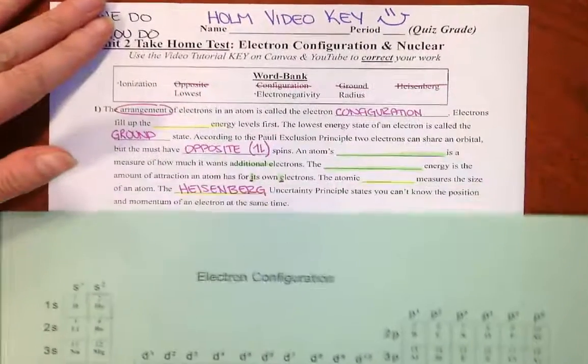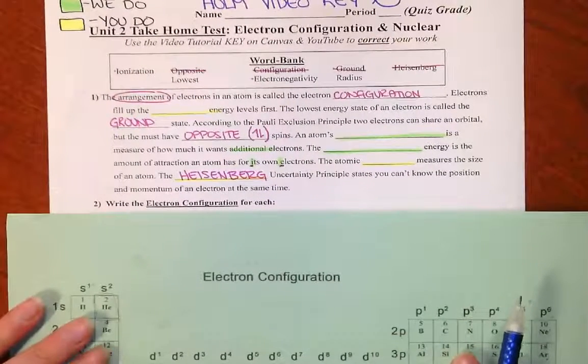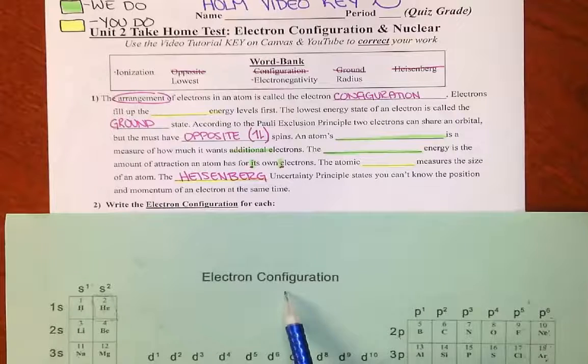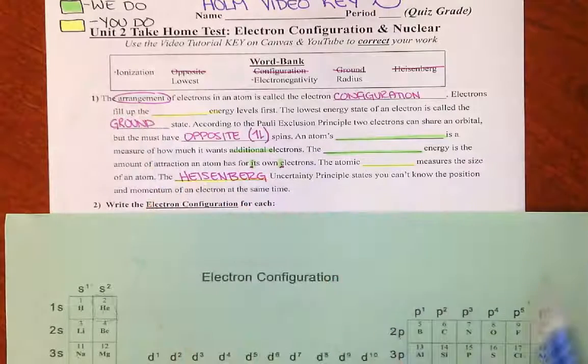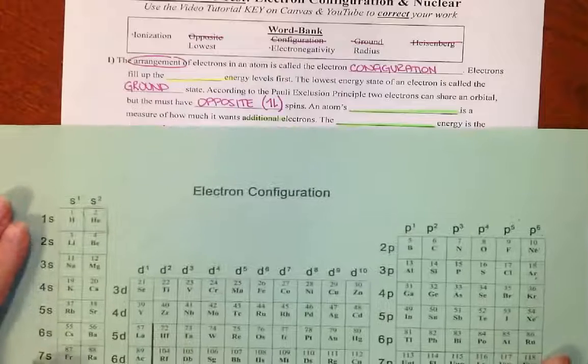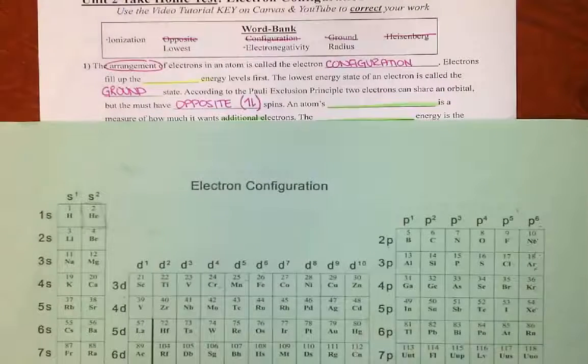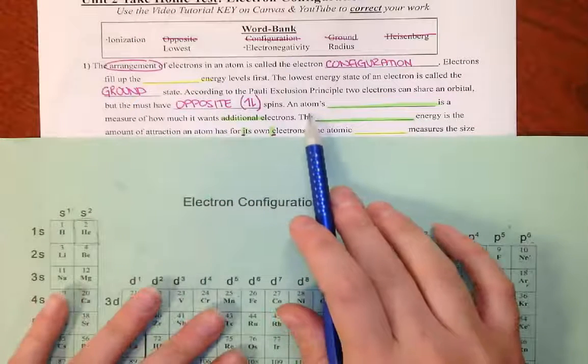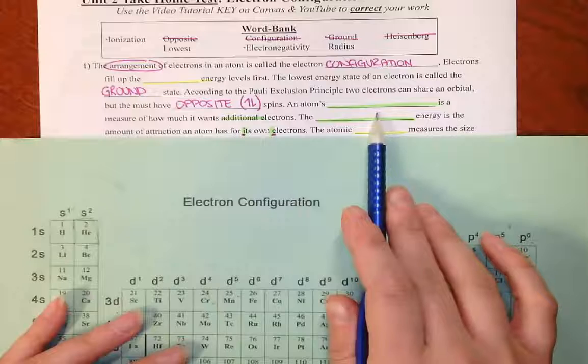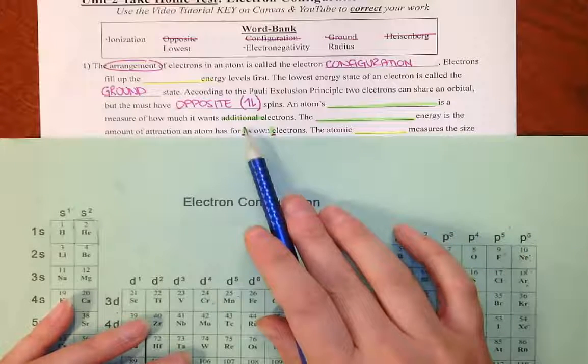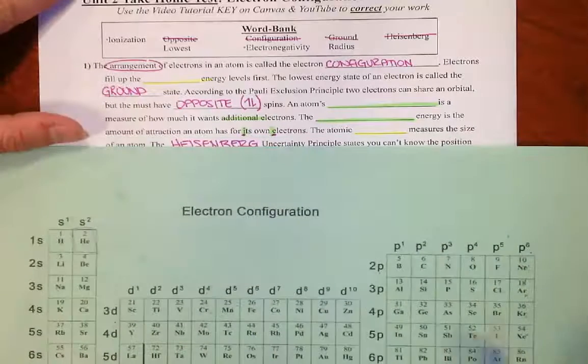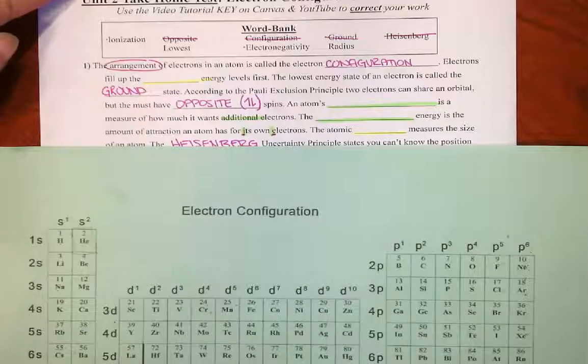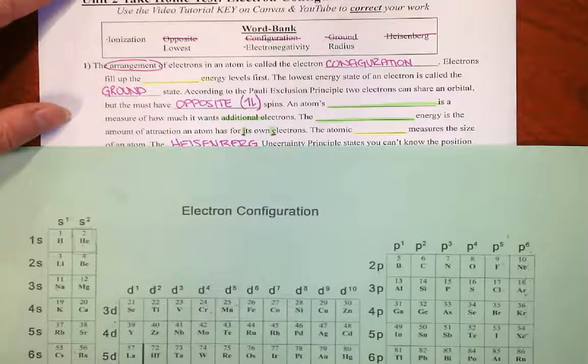So let's look at our vocabulary for this unit. Really important vocabulary. The whole point of our electron configuration is telling us where electrons are arranged. The periodic table being pulled apart in this way is showing us where those electrons are in terms of levels and sub-levels. An atom's blank is a measure of how much it wants additional electrons. The blank energy is the amount of attraction an atom has for its own electrons. So these two concepts are very similar, but we need to be able to tell them apart.